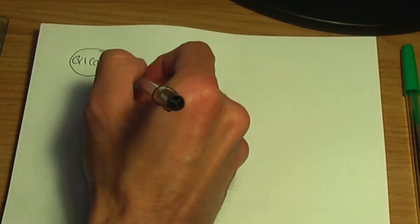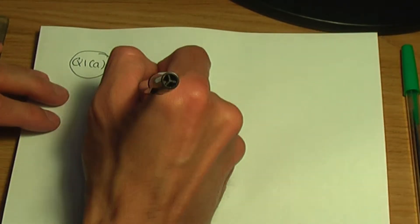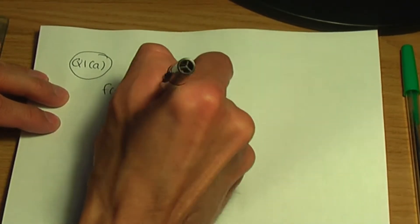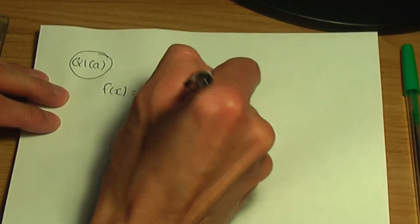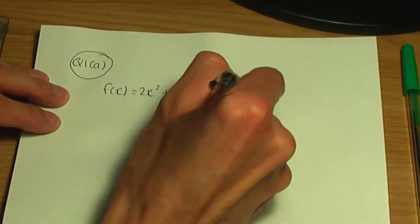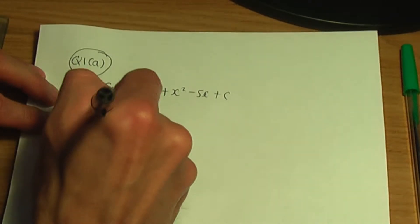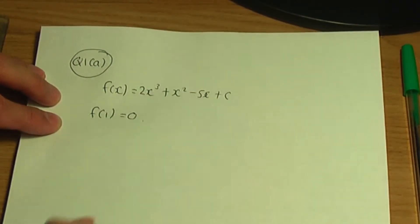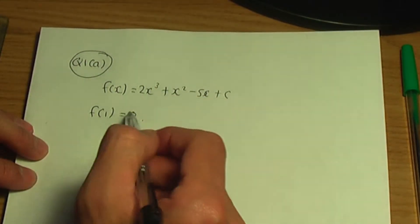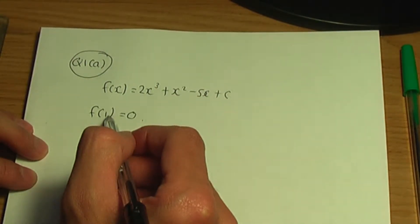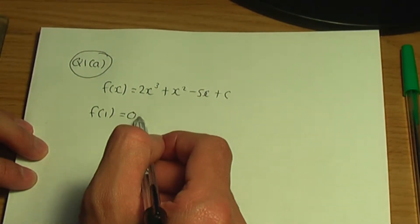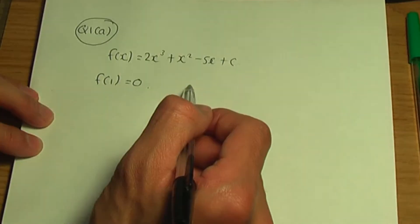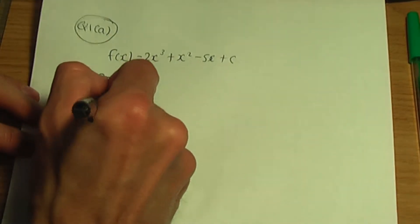Back to paper and pen. So we have f of x, which is 2x cubed plus x squared minus 5x plus c, and we've been given that f of 1 is 0. What we're going to do is find f of 1, equate to 0, and then calculate the value of c.